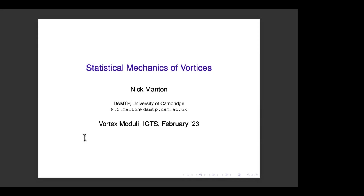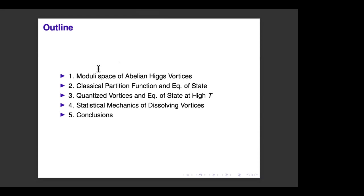We're doing what Nuno described as second-order dynamics, which means there is a configuration space — the moduli space of static vortices — and I'm interested in motion through that moduli space. There needs to be a phase space on top of the moduli space, which is the cotangent bundle. The cotangent directions are momenta, and I have a Hamiltonian that's quadratic in momenta — typical second-order dynamics.